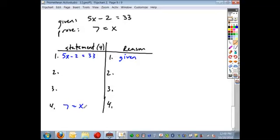But what would be the first mathematical step in solving for X here? Add 2 to both sides, so we get 5X is equal to 35. Since we added, we justify that statement as addition property. And then what can we do? Divide by 5, we get X is equal to 7. Once again, division property.